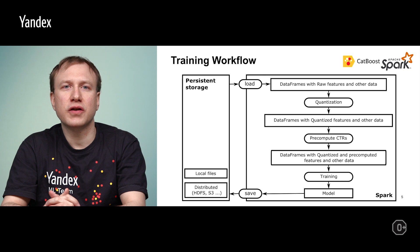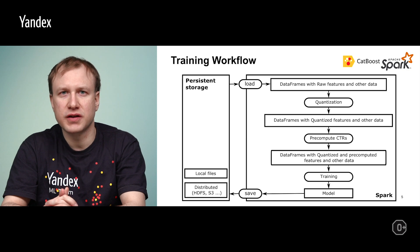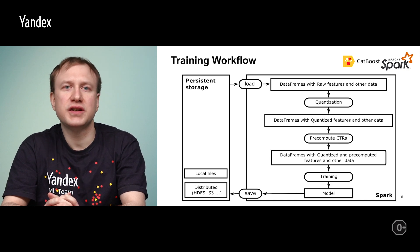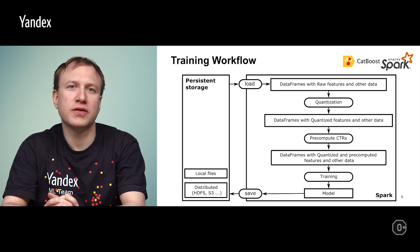If there are categorical features and some of them have more than the one-hot max size unique values — a parameter to choose between categorical feature processing types — CTR pre-computation is performed. In this case, new derived features are added to the data frame for learning. The data is then ready to be used in the CatBoost training process. The resulting model is then saved to permanent storage for possible later use.